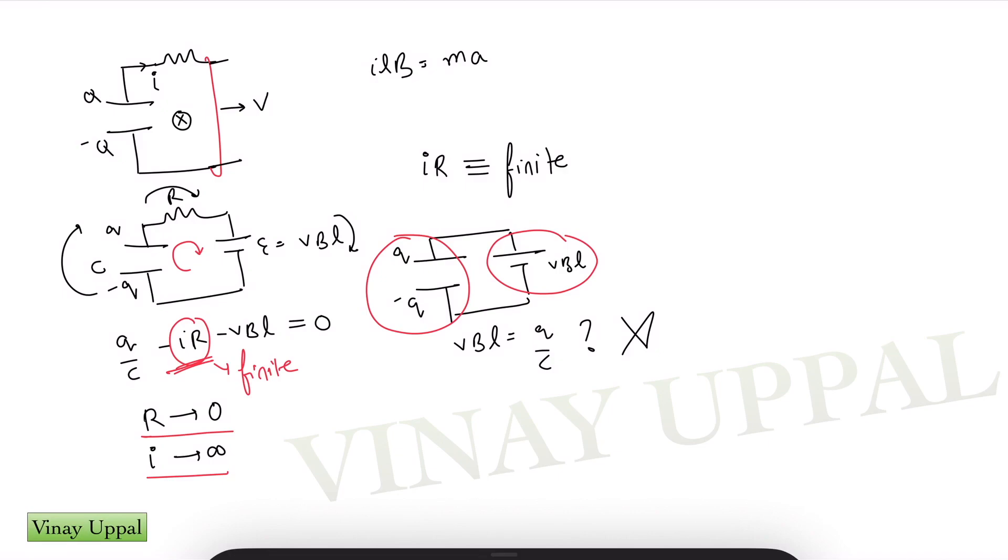So all of this happens, like I said, in a very short interval of time. But in that short interval of time, you cannot write V B L is equal to Q by C.